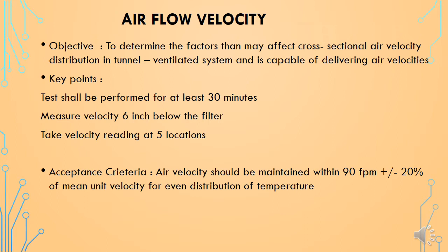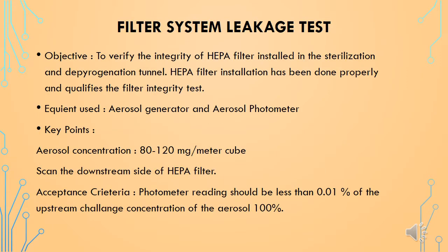The acceptance criteria for the air velocity check is that air velocity should be maintained within 90 feet per minute, plus or minus 20 percent of mean unit velocity, for even distribution of temperature.